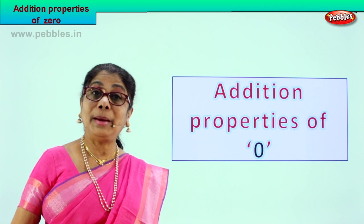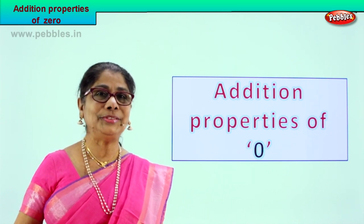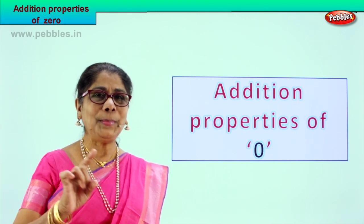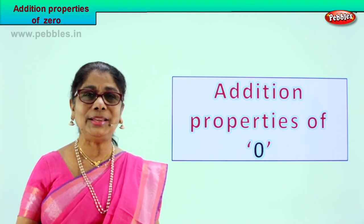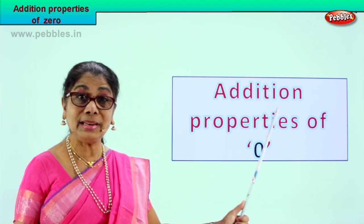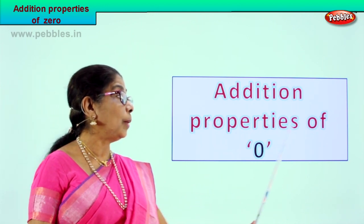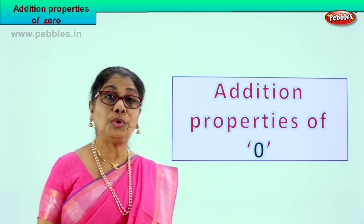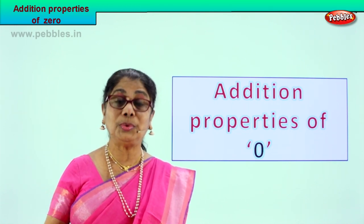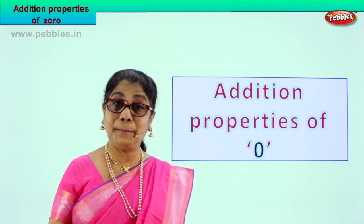Mummy gives you two chocolates and daddy gives you zero chocolates. Two plus zero, what do you get? Two. So we are going to look at addition and the properties of zero. Any number plus zero gives you the number itself — any number.